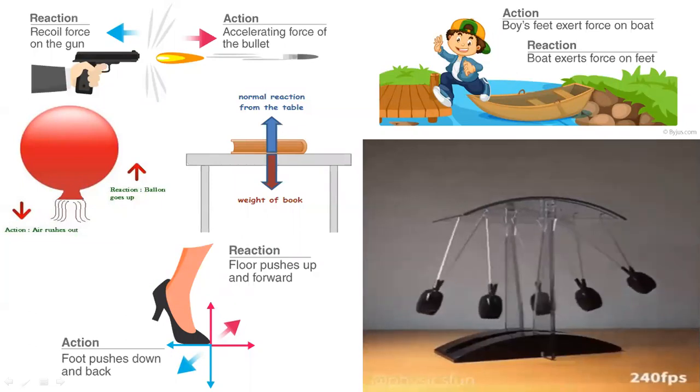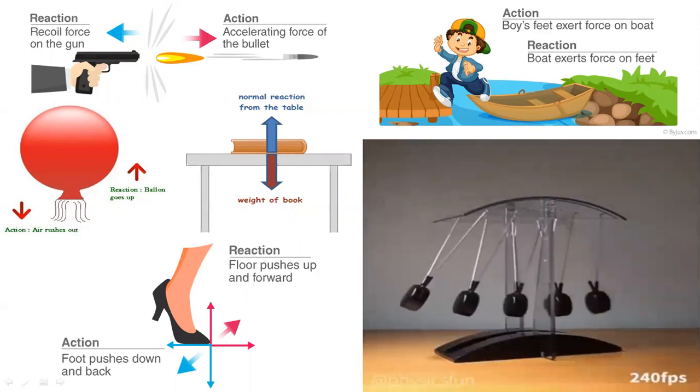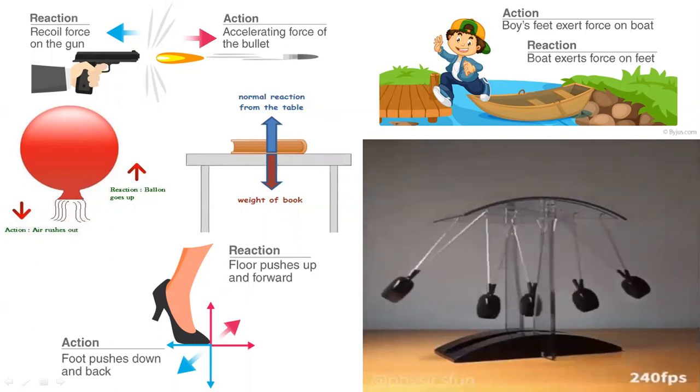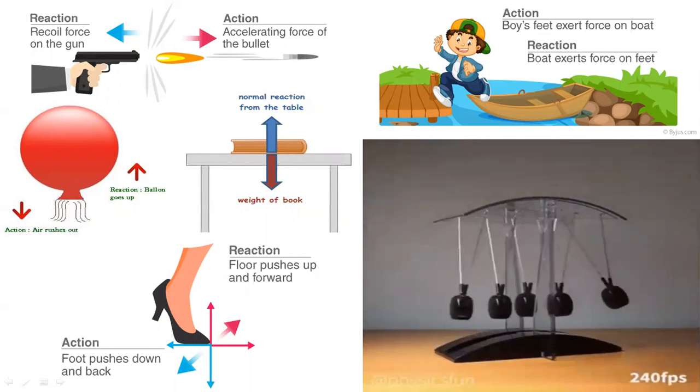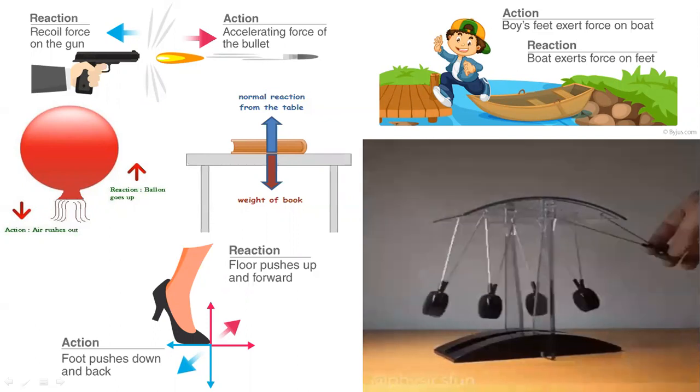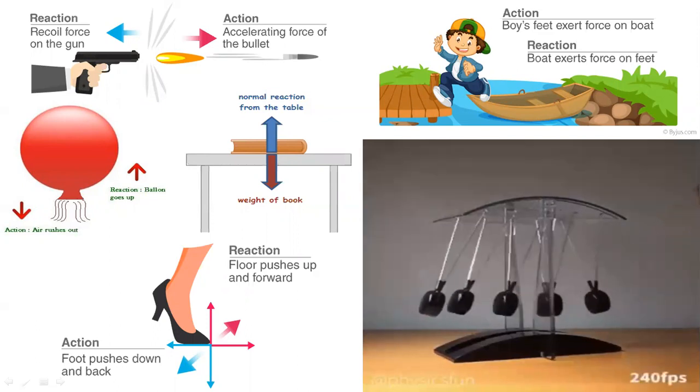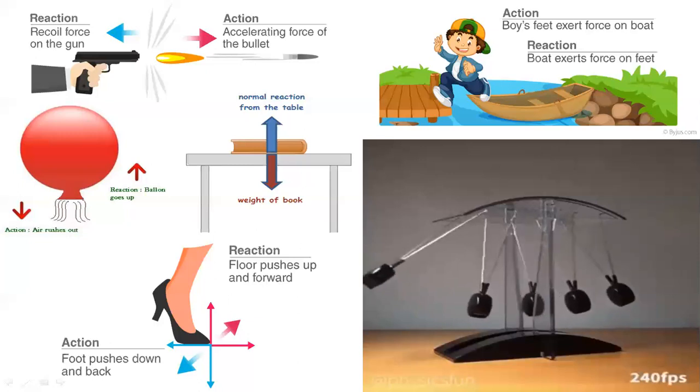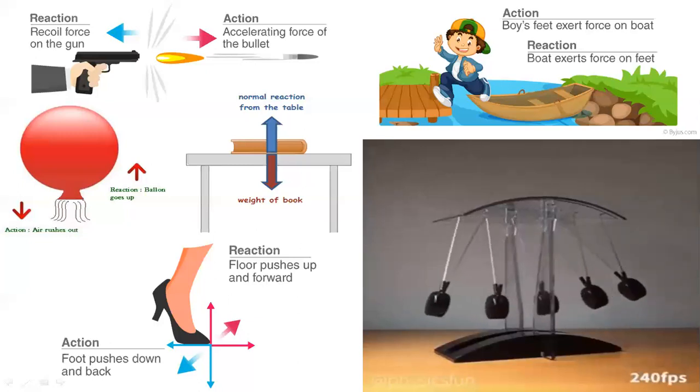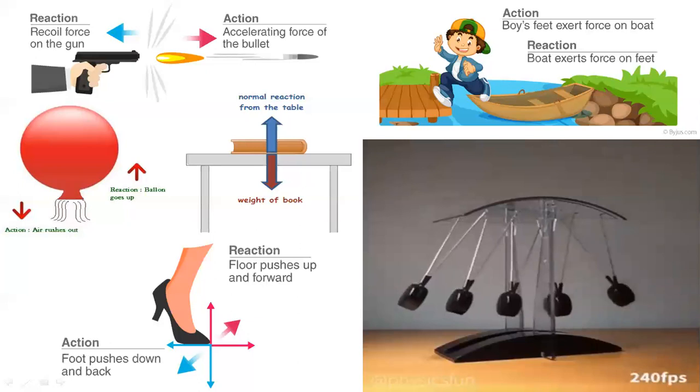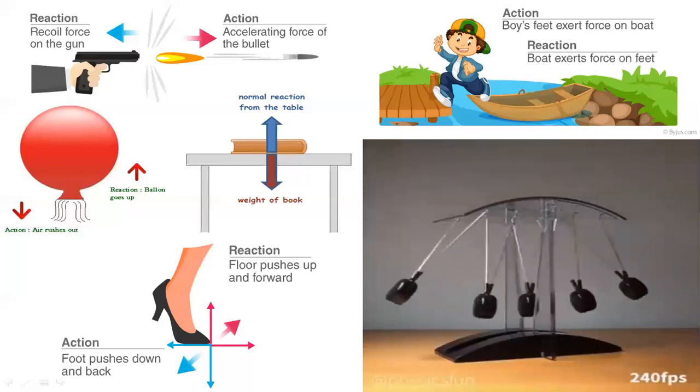The force that you exert on a body is in the opposite direction to the force that body exerts on you. Experiments show that whenever two bodies interact, the two forces that they exert on each other are always equal in magnitude and opposite in direction.